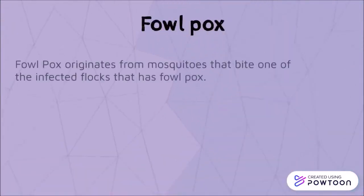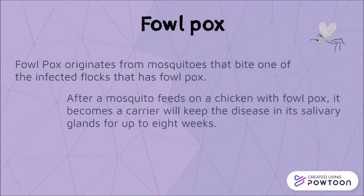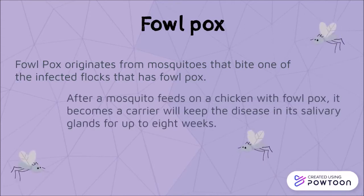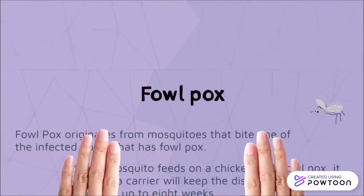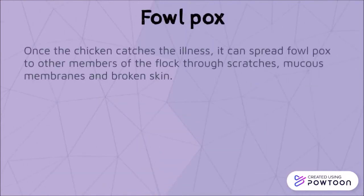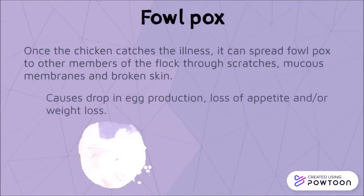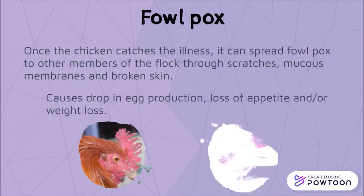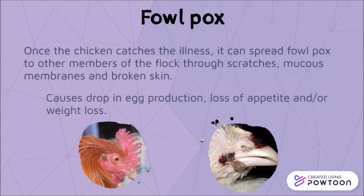Next is fowl pox. Fowl pox originates from mosquitoes that bite one of the infected flocks that has fowl pox. After that, the mosquito becomes a carrier and will keep the disease in its salivary glands for up to eight weeks. When one of the chickens is infected, it can spread the fowl pox to other members of the flock. This causes a drop in egg production, loss of appetite, and weight loss.